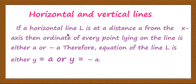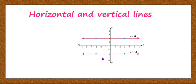If a horizontal line L is at a distance a from the x-axis, then the ordinate of every point lying on the line is either a or minus a. Therefore, the equation of the line L is either y = a or y = -a. In general, it may be y = a where a is any real number. In particular, if y = 0, it is also a horizontal line, which is the x-axis.